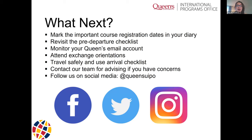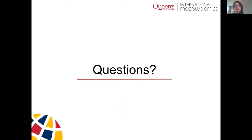Here's what happens next: mark the important course registration dates and other dates we've mentioned in your diary or schedule. Revisit both the pre-departure and arrival checklists. Monitor your Queen's email account — try to look at it every day. Attend the exchange orientations we've promoted. Travel safely and remember to use the arrival checklist. Contact our team if you have any concerns, issues, or need advising. And make sure you follow us on socials — we are at Queen's U IPO. That wraps our session — it was very full of information and we hope it's helpful for you.